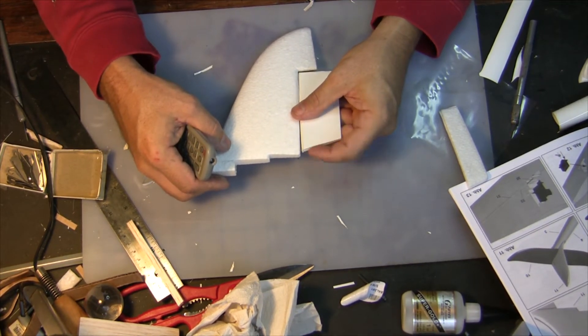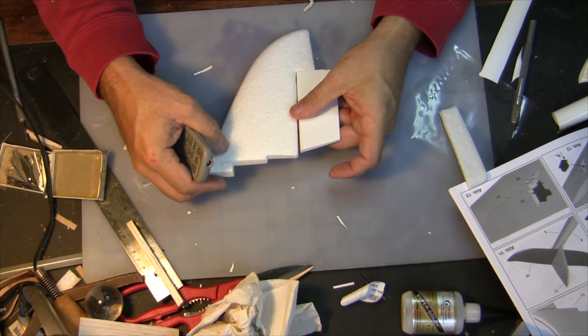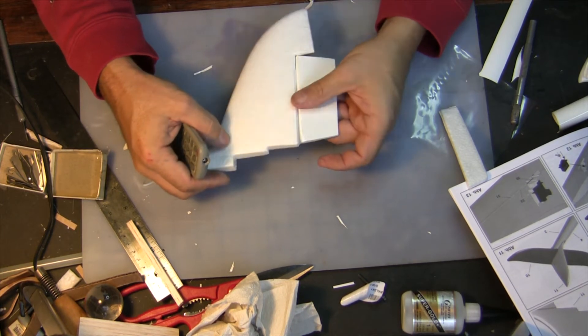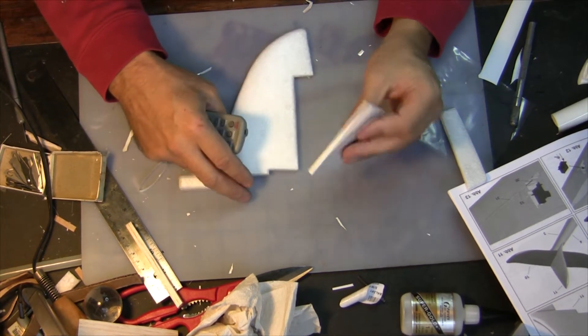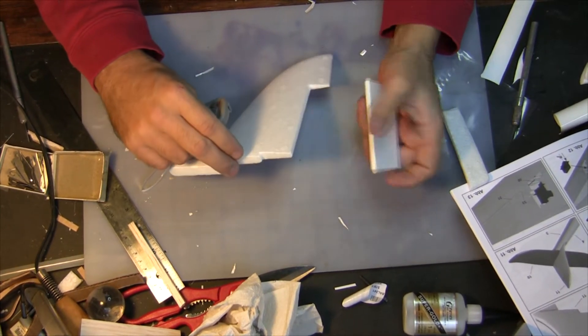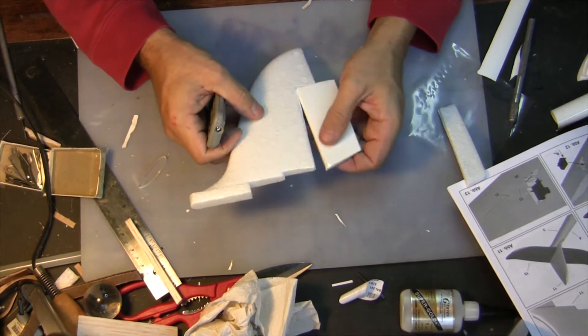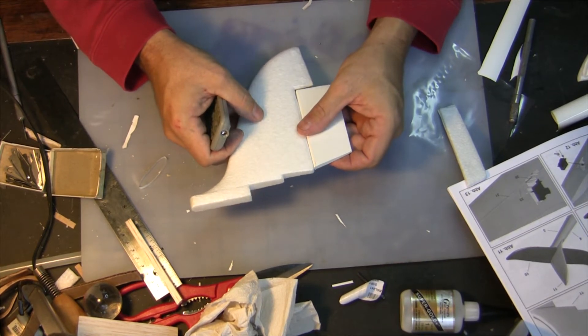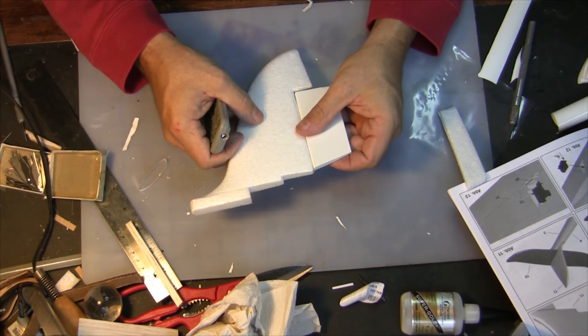Obviously I made an angle here so that the elevator can go up and down, and this will give me a little bit more rudder control. Then I just covered it with some ultracoat, monocoat, whatever you got, and I'm going to use some CA hinges, and hopefully that will work, and just hinge that right in there.